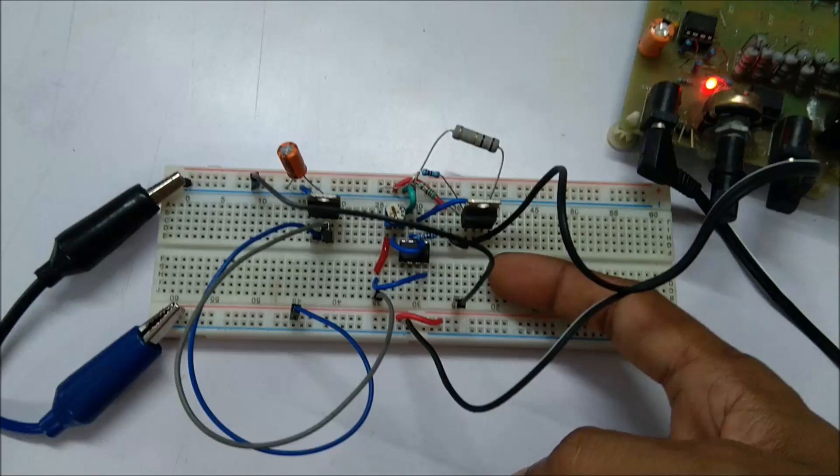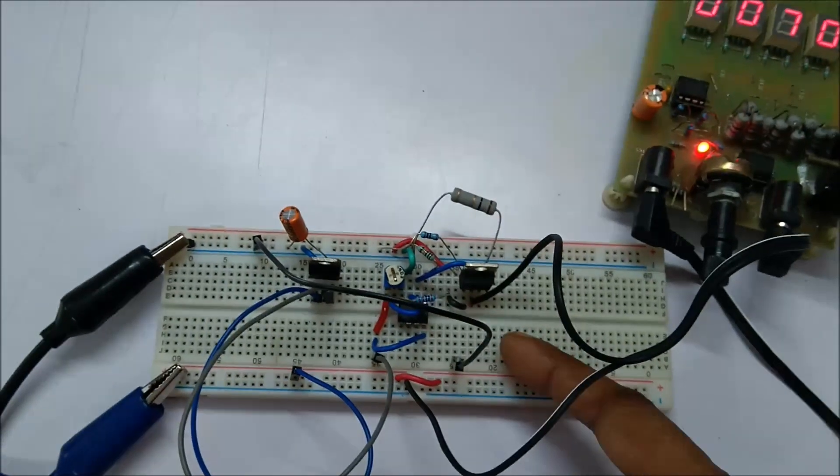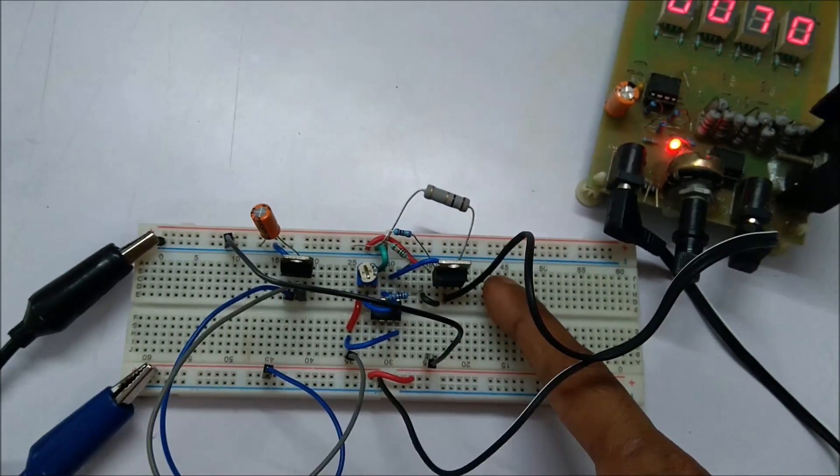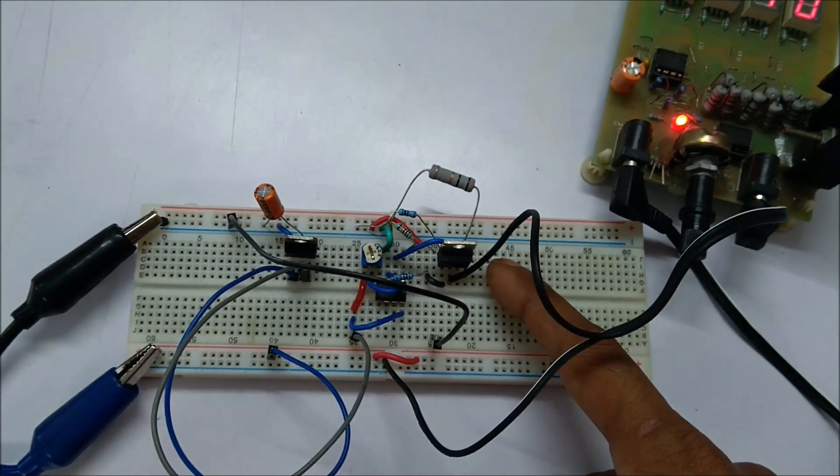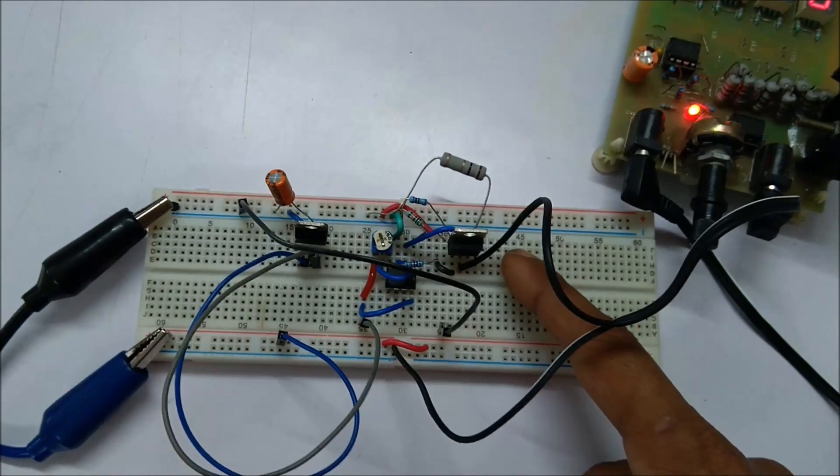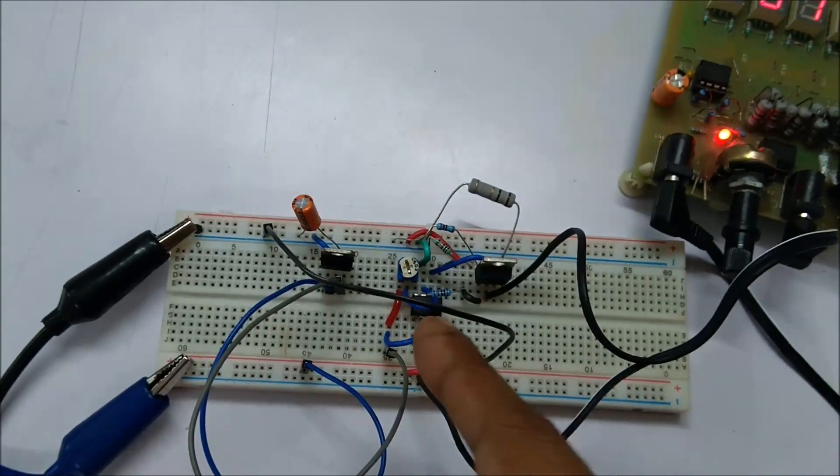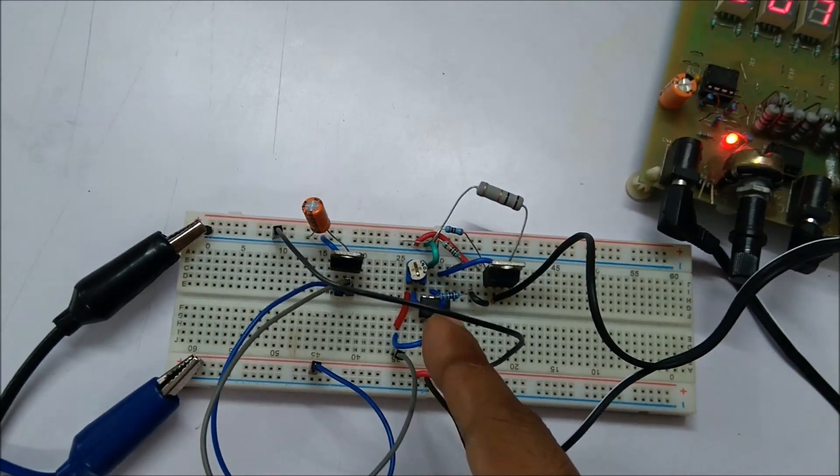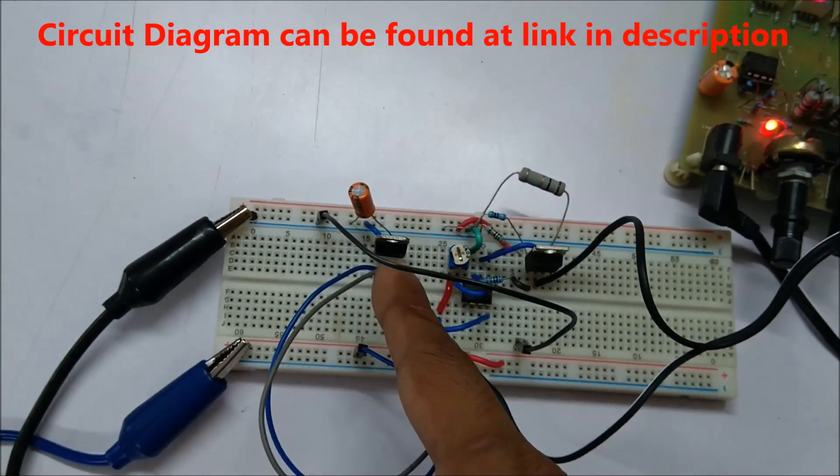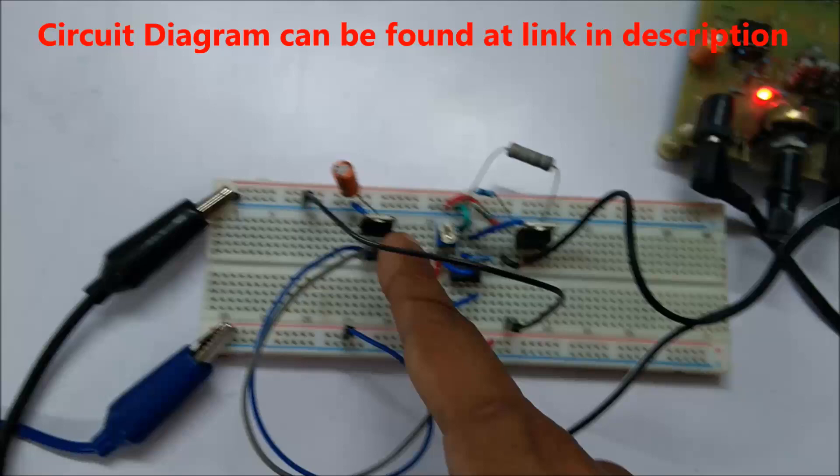The operational amplifier LM358 is controlling an N-channel MOSFET, which is the IRF540N. The entire circuit and the operational amplifier is powered from the LM7809, which is a 9-volt linear regulator.